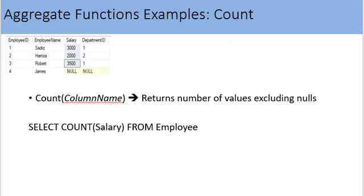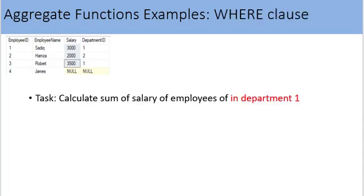In the second variation, we can pass a column name as argument to COUNT. In this case, COUNT counts the number of non-null values in a column. For example: SELECT COUNT(salary) FROM employee. It counts values in the salary column excluding NULLs, so the output will be 3, because there are 3 non-null values in the salary column.